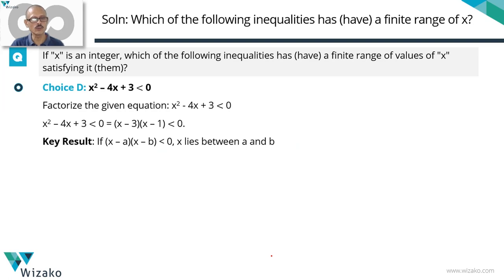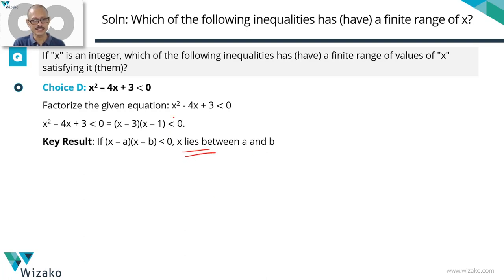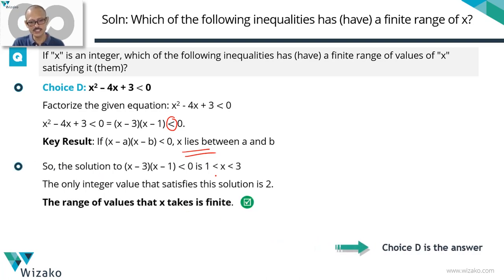To summarize option D: factorized as (x − 3)(x − 1) < 0. Key result: (x − a)(x − b) < 0 means x lies between a and b. With a = 1 and b = 3, the solution set is 1 < x < 3. Since x is an integer, the only value it can take is x = 2. Choice D is the answer.